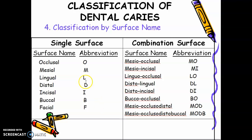What about labial? For example, class 5 on tooth number 1-1, labial. Instead of using labial — because it would share the same letter L as lingual — you just use F for facial. So single surface: occlusal, mesial, lingual, distal, incisal, buccal, and facial.